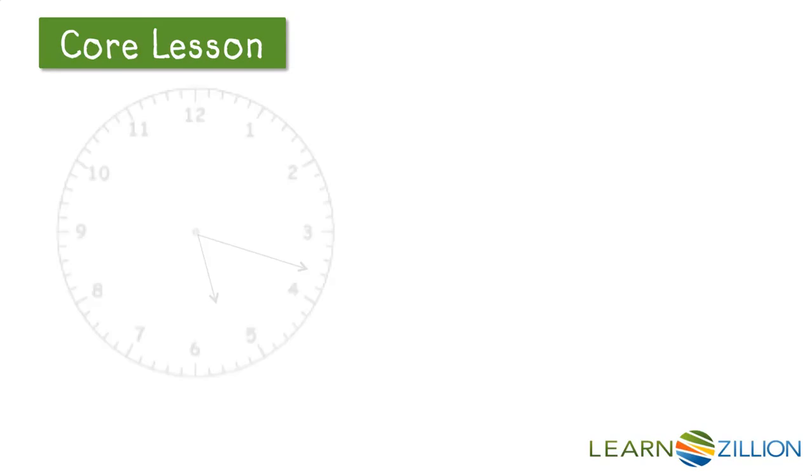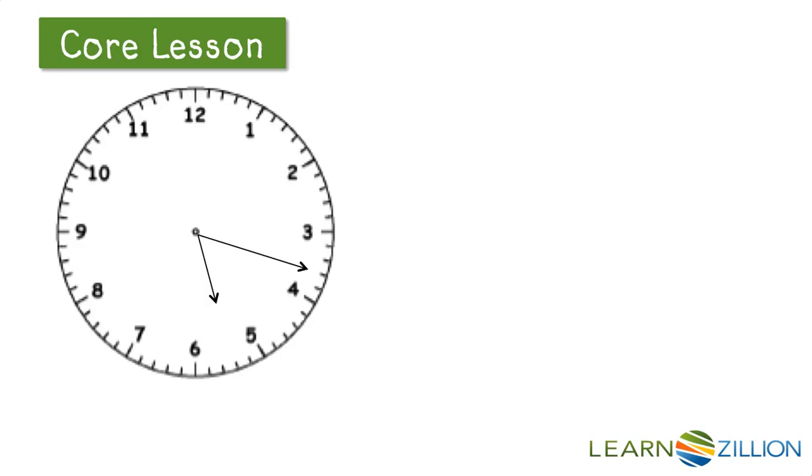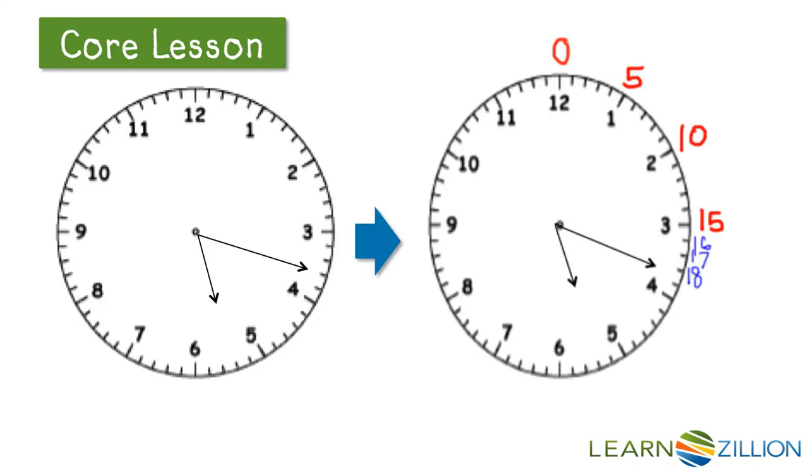Let's try it. Looking at this clock, we know the hour hand is pointing past five, so it's five o'clock. Now we focus on the minute hand and use our counting strategy. We count zero minutes, five, ten, fifteen, and then start counting by ones: sixteen, seventeen, eighteen. Now we know this clock shows 5:18, or eighteen minutes after five o'clock.